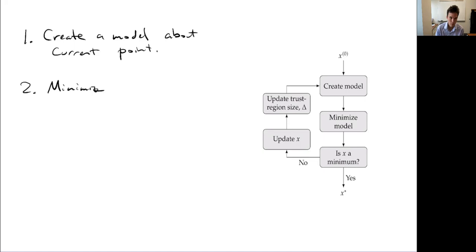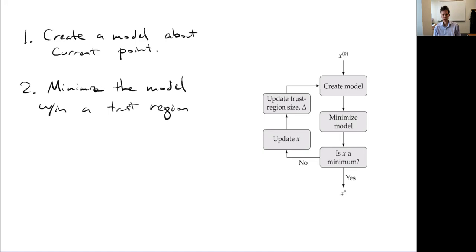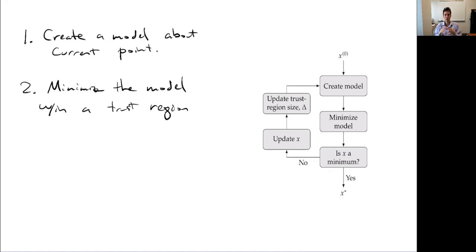The second step is to minimize the model. We find the point within or on the model that provides the minimum solution within what we call a trust region. This captures the idea that our local model should be a good approximation nearby, but as we go further away, we have no idea how well it will work. The trust region defines how far we trust our model. Outside of it, we think it's bogus; inside, it's probably a good approximation. So if the minimum is far away, we don't want to accept that point — it's too far away to trust. We constrain the problem to find the minimum within some boundary.